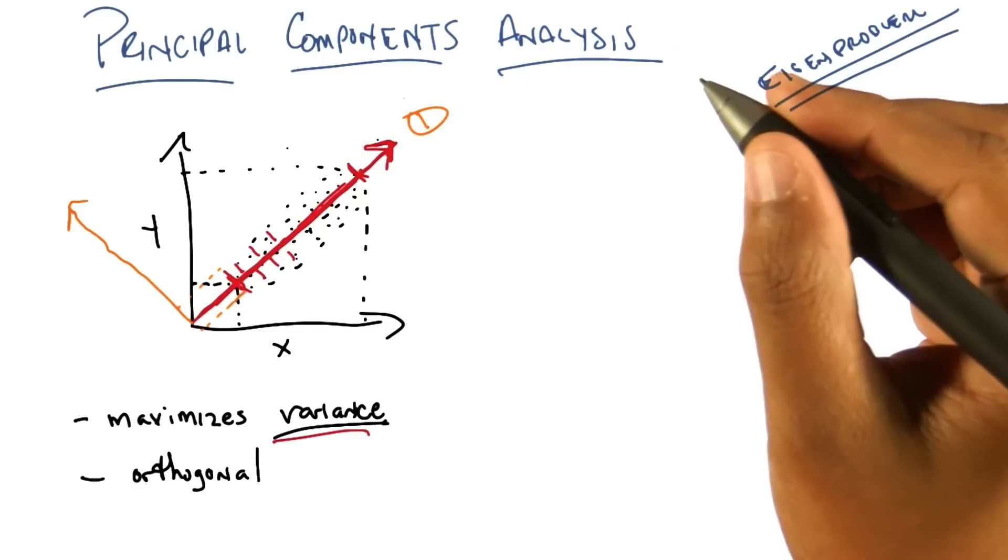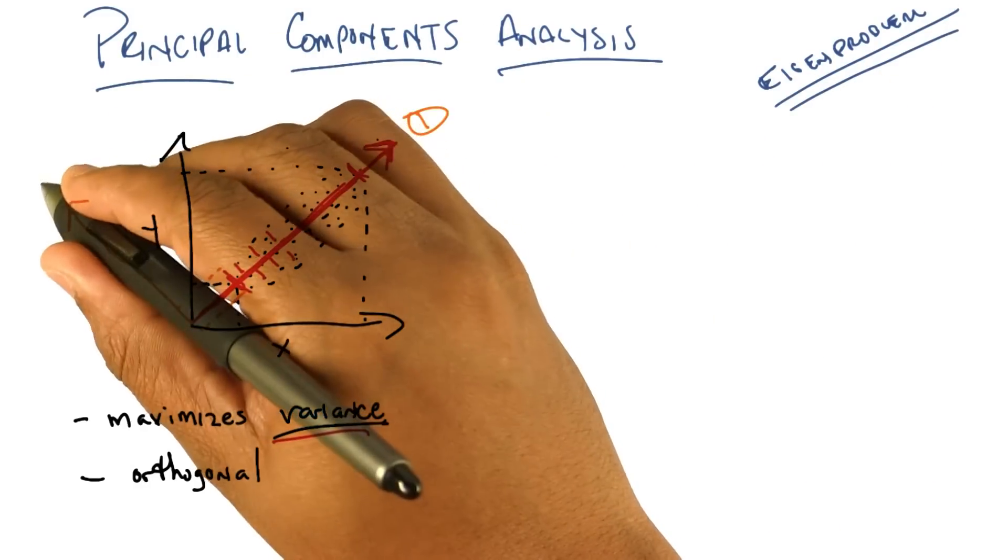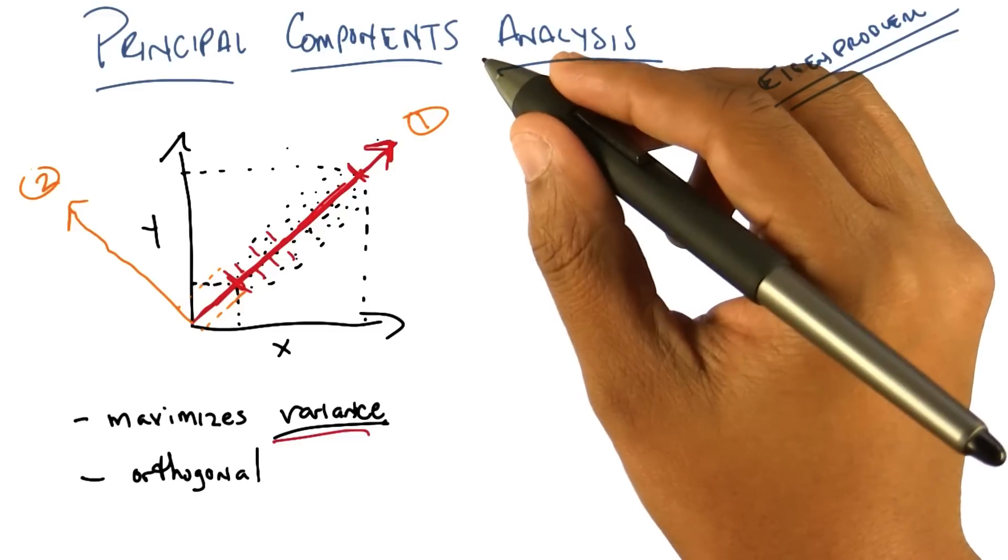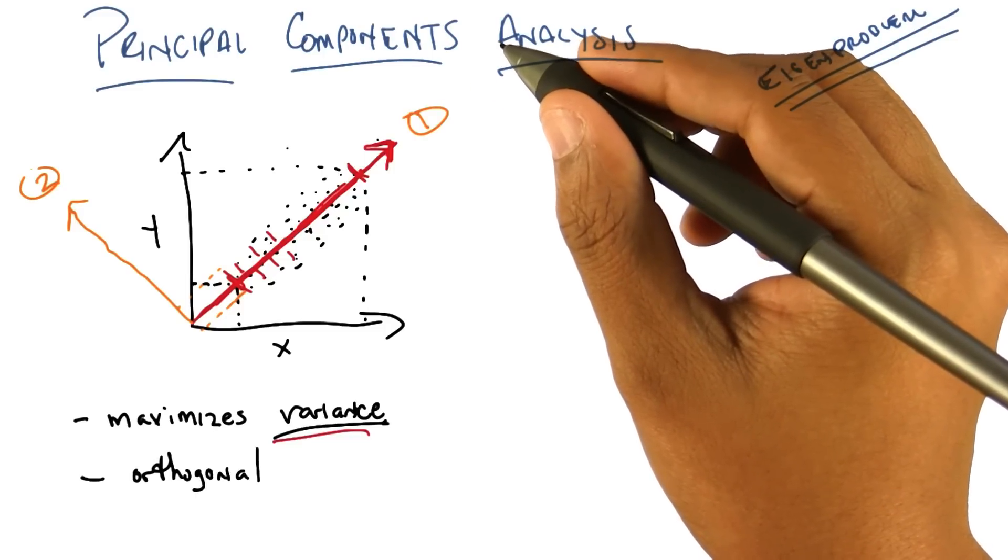So, this is called the first component, or the principal component, and this is called the second, or second principal component of this space. Okay? Does that make sense? Yep.